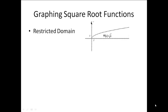We're going to graph square roots and cube roots today. When we're looking at the graph of the square root function, there are a couple things that happen. First of all, we have to have a restricted domain because we can't take the square root of negative values without getting into imaginary units. So our domain has to be x is greater than or equal to 0 when we're doing square roots.